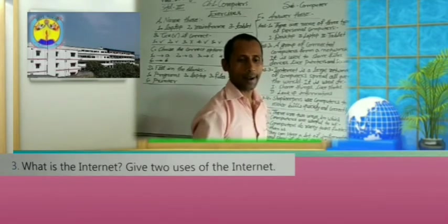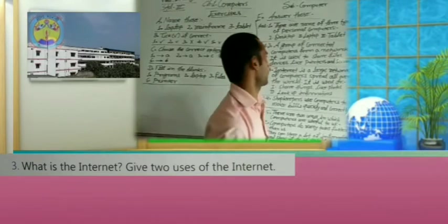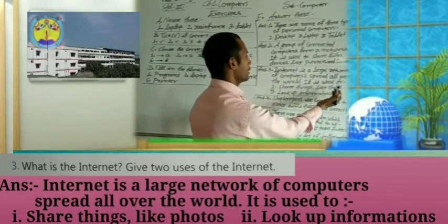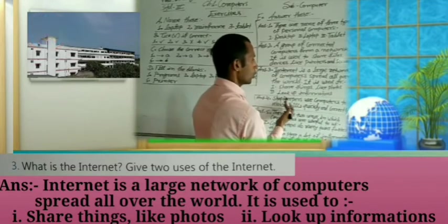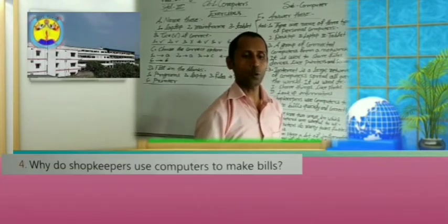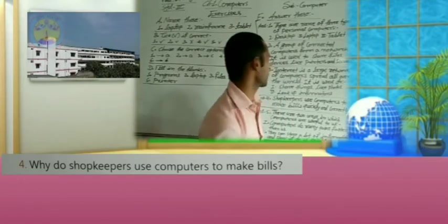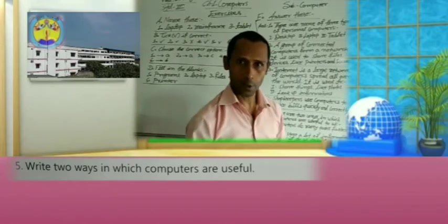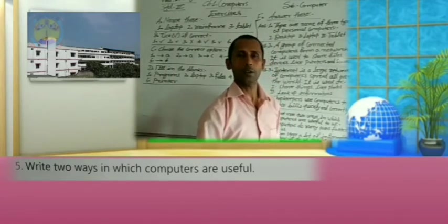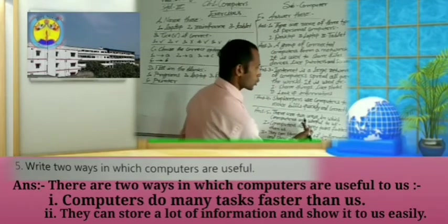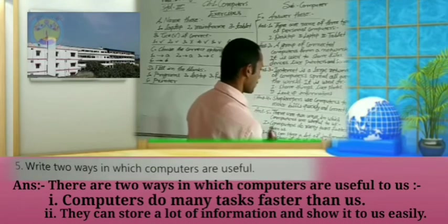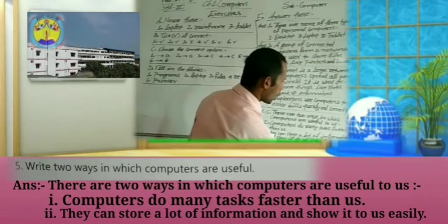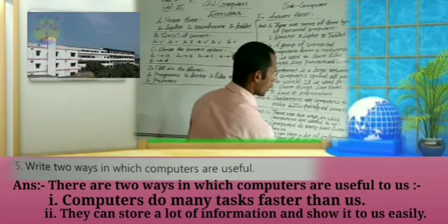Now, third question: what is the internet? Answer: the internet is a large network of computers spread all over the world. It is used to share things like photos and look up information. Fourth: why do shopkeepers use computers? Shopkeepers use computers to make deals quickly and correctly. Last question: write two ways in which computers are helpful. First, computers can do many tasks. Second, they can store a lot of information, making things easy for us.